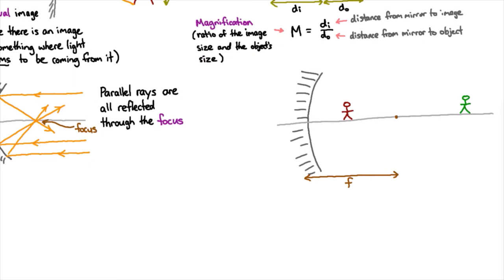The way we work out where those images go is that we consider rays that go through the focus and parallel rays. So if we have a ray that comes in parallel from the top of the head, then we know where that's going to go—it's going to bounce through the focus.